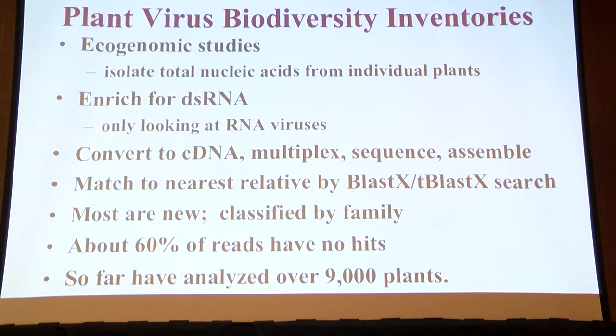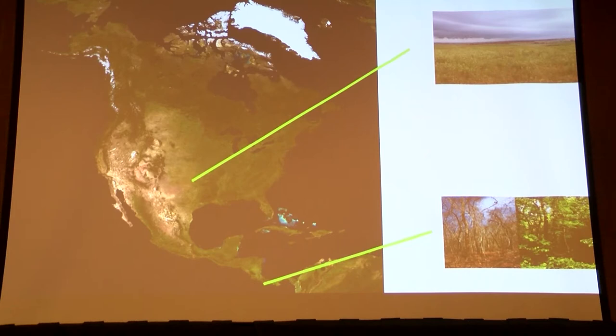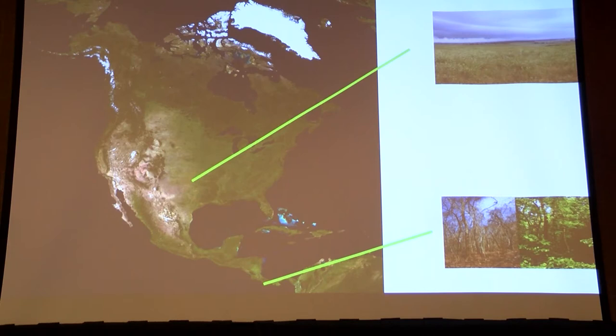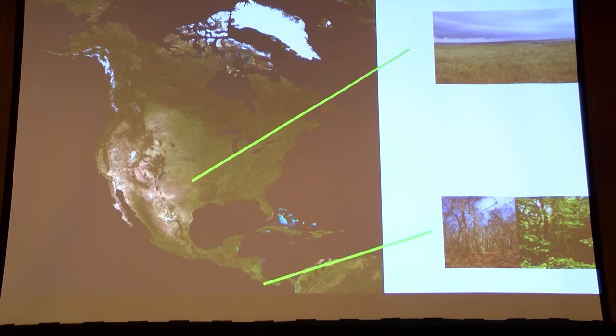The two studies we focused on: one was in the Tallgrass Prairie Preserve in northeastern Oklahoma, and the other in the Guanacosta Conservation Area in northwestern Costa Rica — very different in terms of host diversity. In the Tallgrass Prairie there are about 700 species of plants and we sampled most of them. In the Guanacosta Conservation Area there are about 10,000 species of plants — it's a biodiversity hotspot with almost 3% of the world's plant species in an area the size of a county.